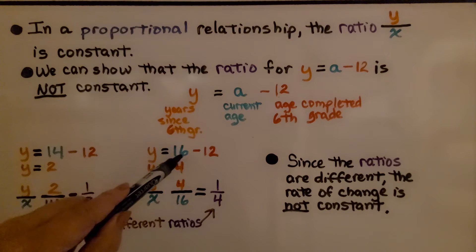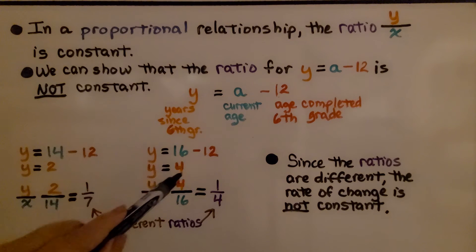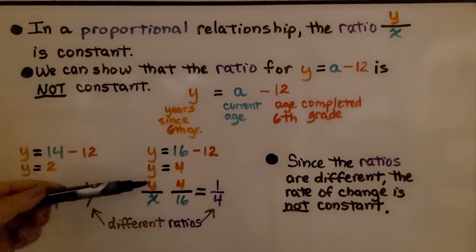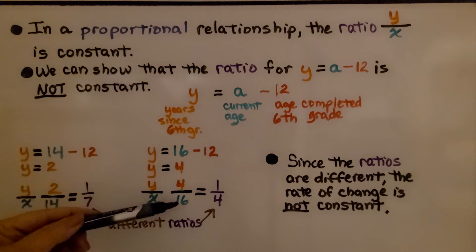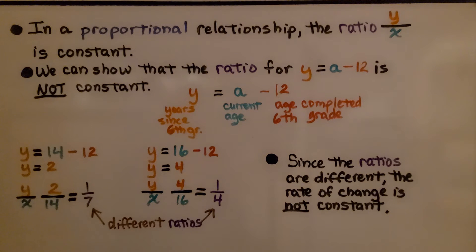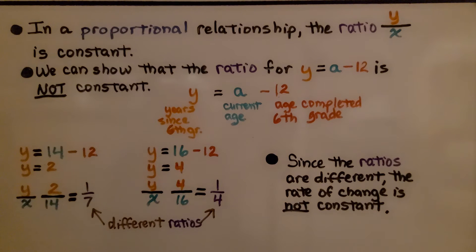If her current age is 16, we subtract 12 and get 4, so y equals 4. Our y to x ratio is 4 to 16, which simplifies to a 1 to 4 ratio. We have different ratios. Since the ratios are different, the rate of change is not constant. If the rate of change is not constant, it's nonproportional.